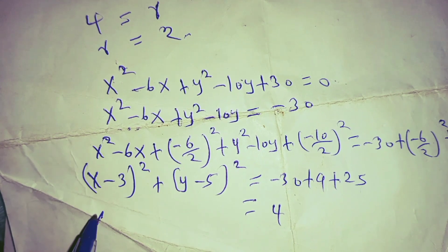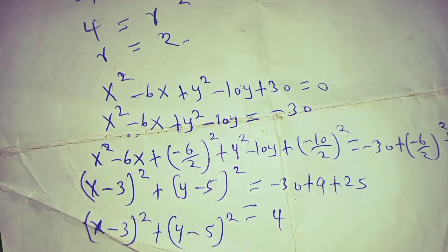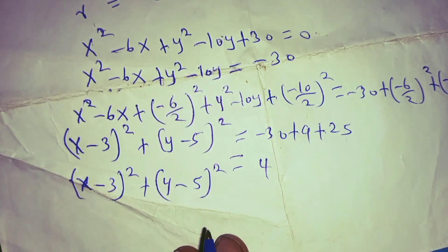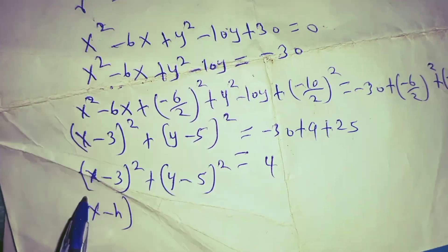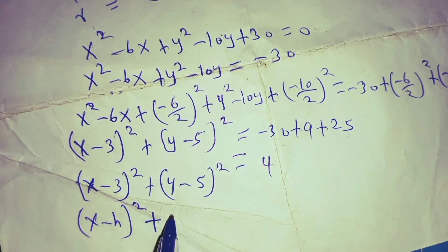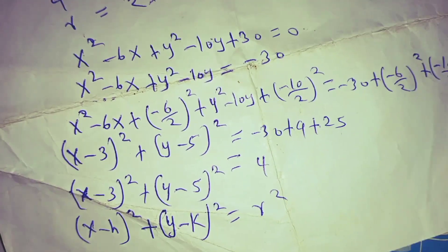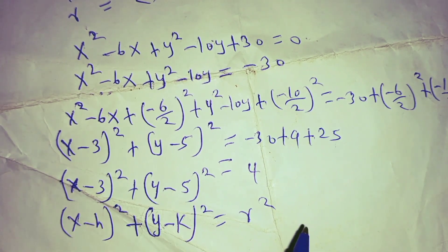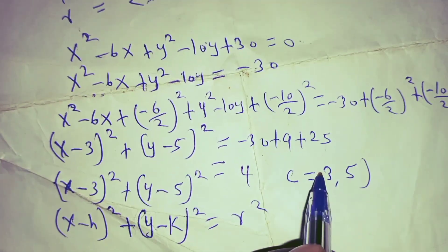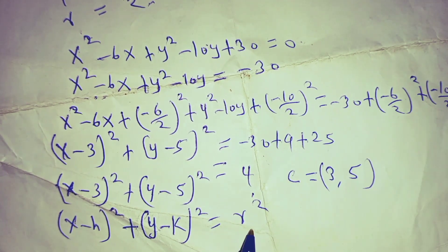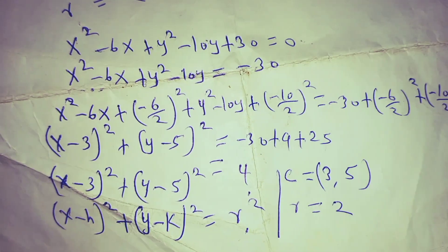So we now have (x minus 3) squared plus (y minus 5) squared equals 4. Comparing this with the standard equation (x minus h) squared plus (y minus k) squared equals r squared, you can clearly see the center of the circle is (3, 5) and r squared equals 4, meaning the square root of 4 is 2, so the radius of our circle equals 2. Those are the two approaches.